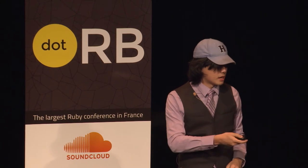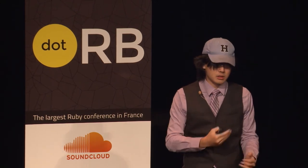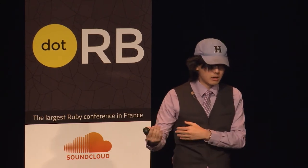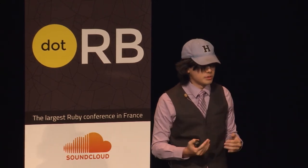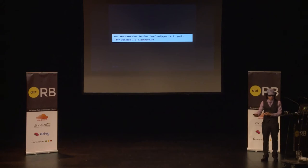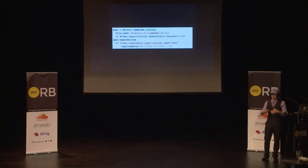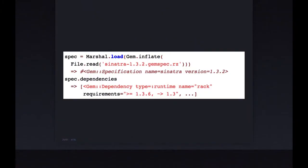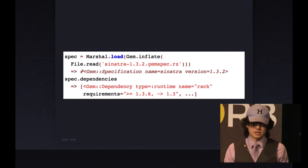One problem is you can look at the Sinatra tuples to figure out the latest version, but nowhere in there is the dependency information you need. So you have to go fetch individual gem spec files that RubyGems provides. Once you download those, the dependencies are available and you can go fetch and install those gems.